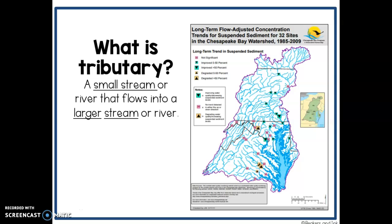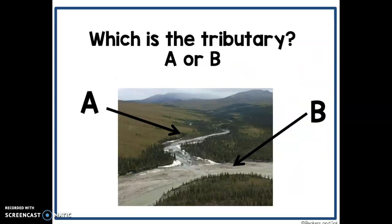Watersheds are made up of tributaries. A tributary is a small stream or river that flows into a larger stream or river. Looking at the Chesapeake Bay watershed, which spans six states, you can see all of the different tributaries — all the different smaller streams and rivers that flow together to a larger river that eventually end up in the Chesapeake Bay. In this picture, one is the main river and one is the tributary — can you tell which one is the tributary, A or B? If you chose A, you're correct.